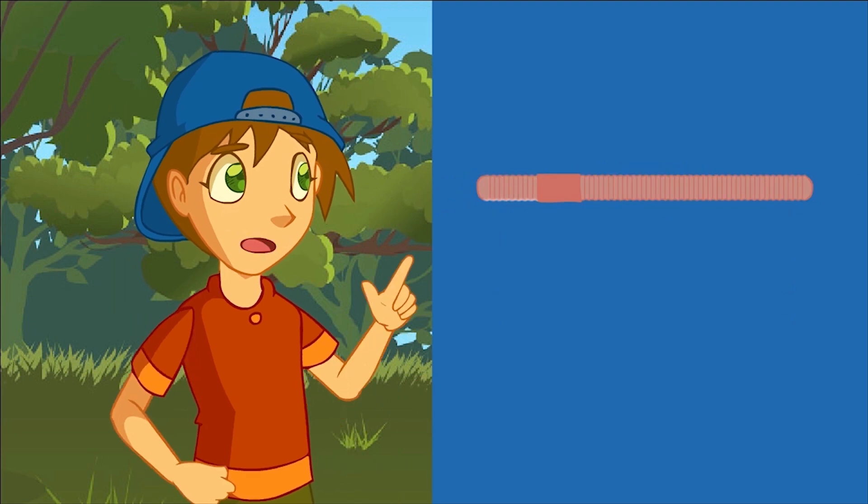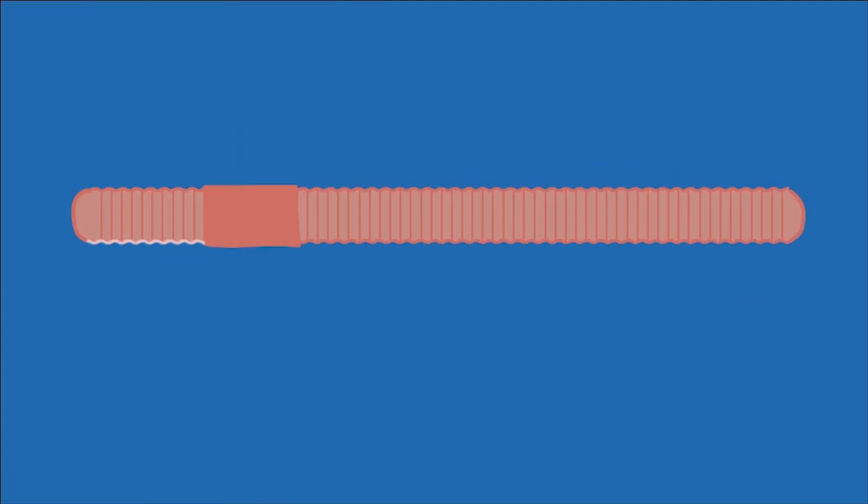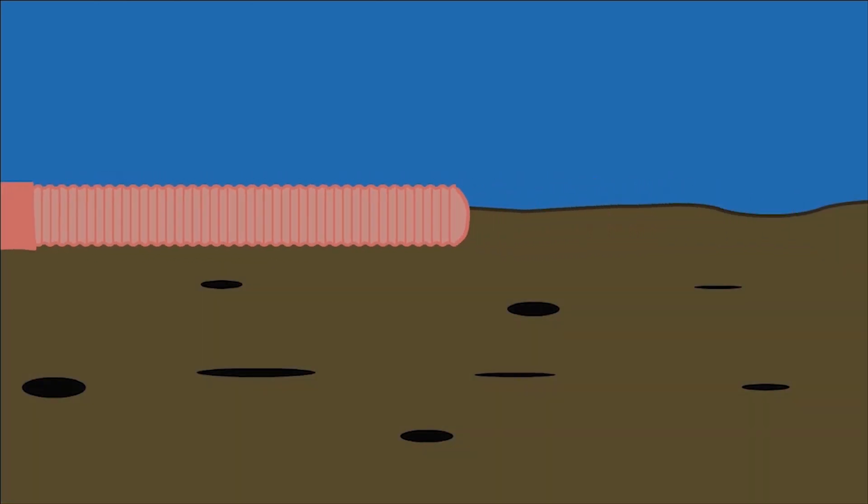Oh, right. So the chaetae on the front part of the worm body attach to the surrounding soil, and as the worm retracts the back end of its body, it moves forward.